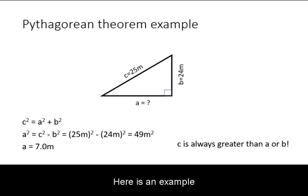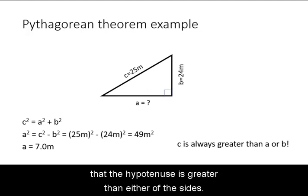Here is an example where the hypotenuse is known and it is one of the sides that is unknown. You solve symbolically first, then do the math on the numbers. Always check your result that the hypotenuse is greater than either of the sides.